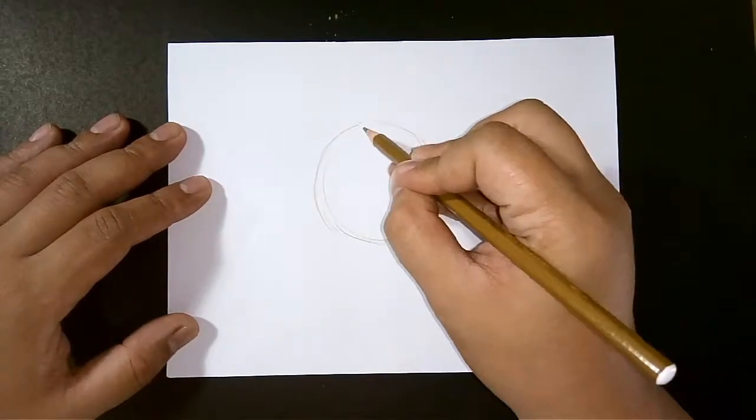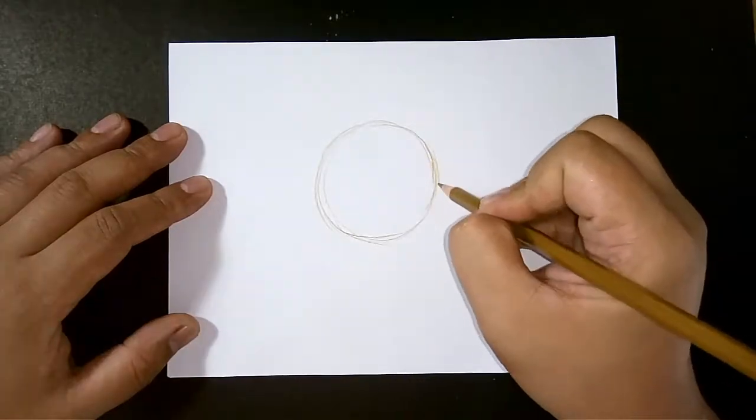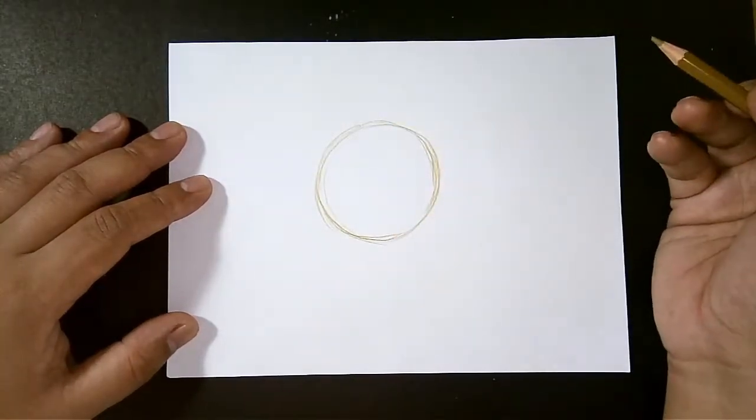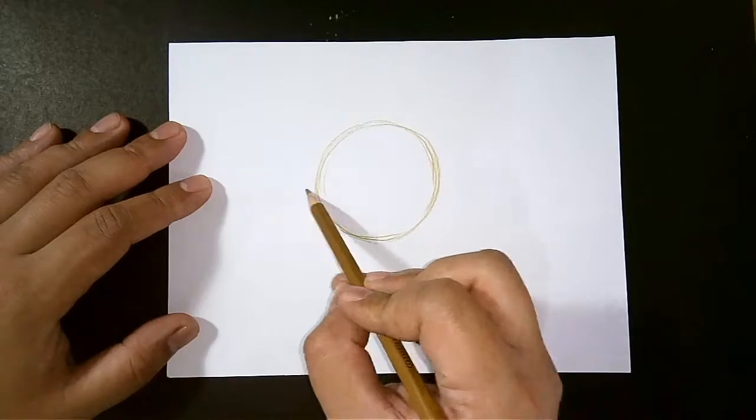First thing that you need to do is make a circle. Don't make it too small though, because this will be the body of our goldfish.